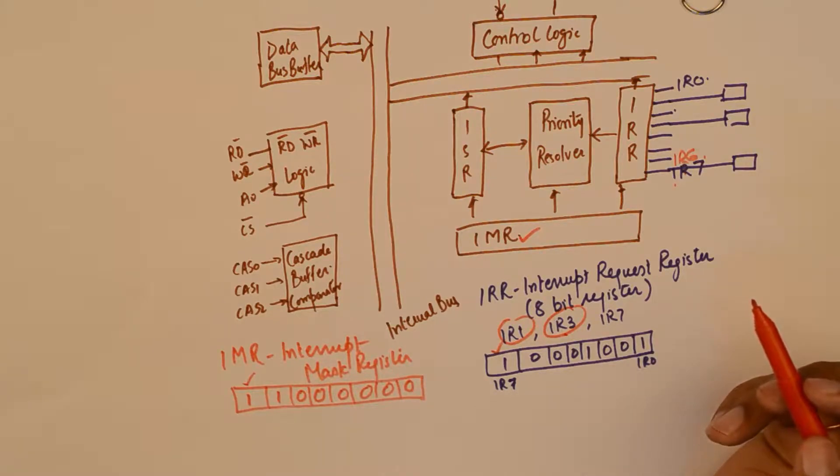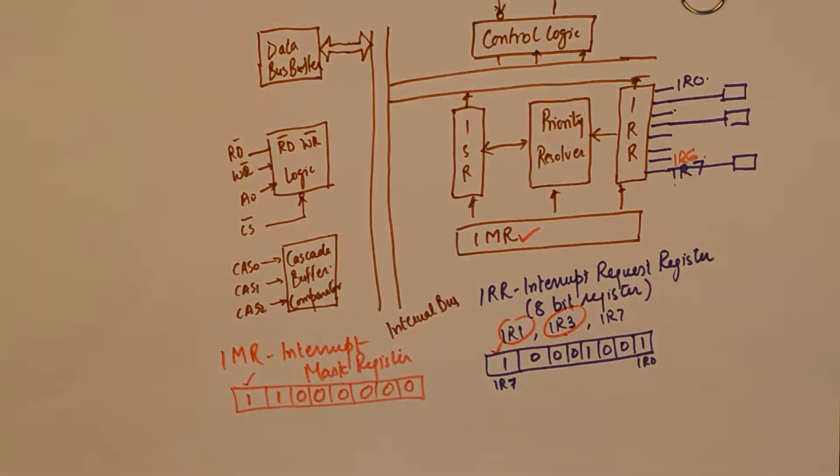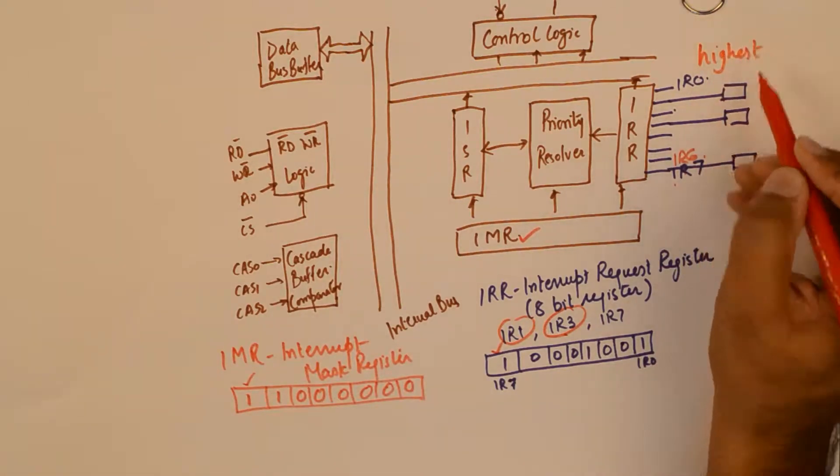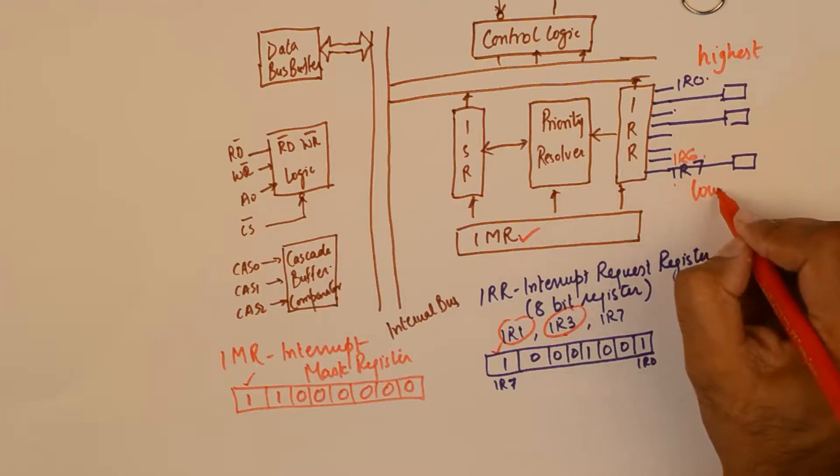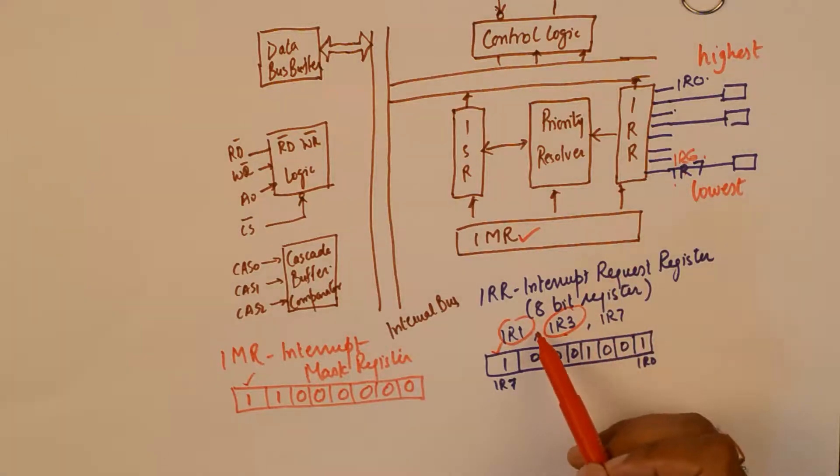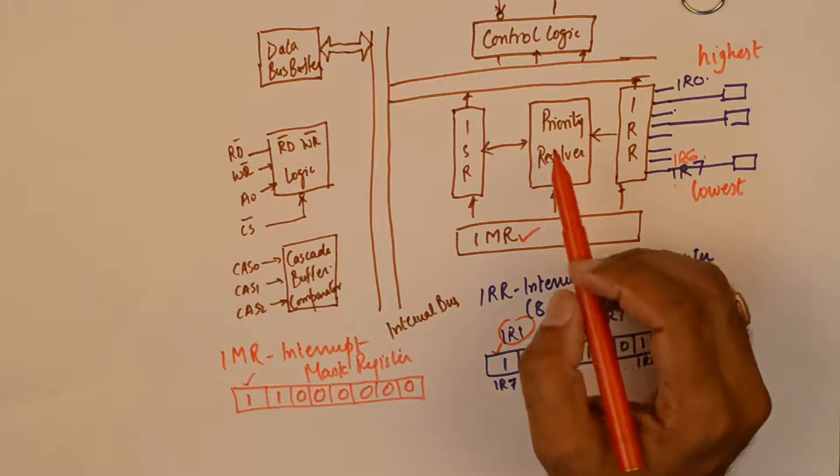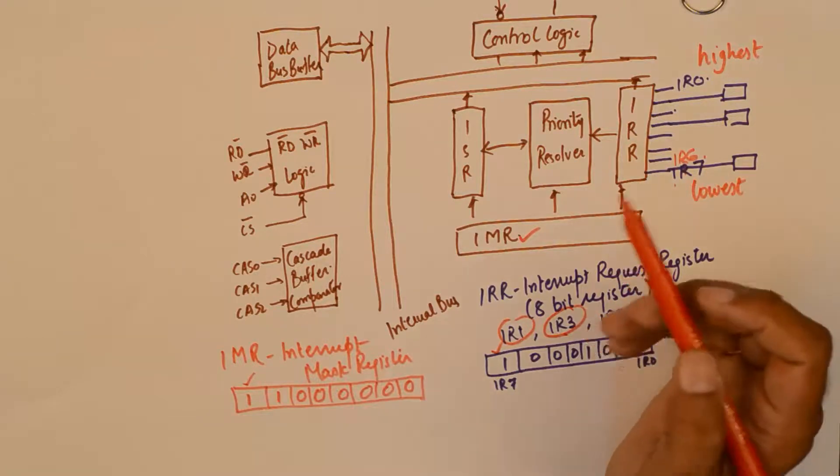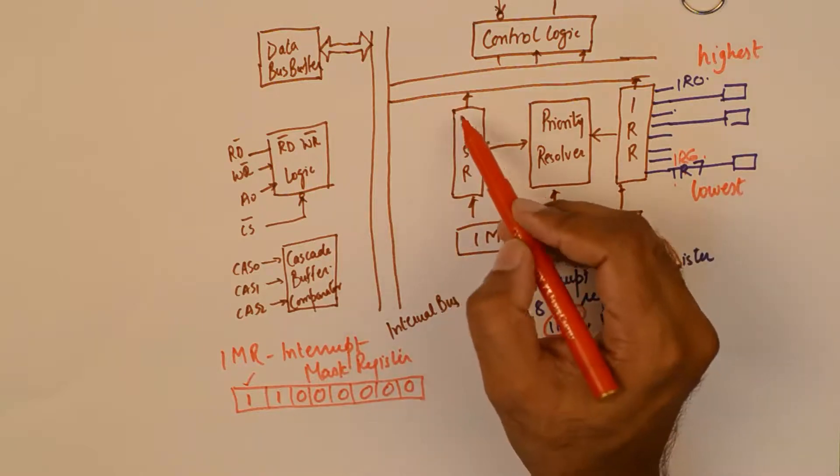Now comes a very important point. What is the default priority of these interrupts. By default IR0 has the highest priority and IR7 has the lowest priority. So we have two interrupts competing for microprocessor services. So IR1 will be forwarded in queue and IR3 will follow IR1 in waiting.